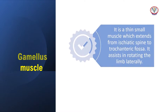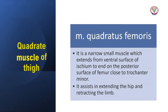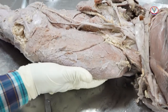The gemellus muscle is a thin, small muscle which extends from the ischiatic spine to the trochanteric fossa. The quadratus femoris muscle is a narrow, small muscle which extends from the ventral surface of the ischium to the posterior surface of the femur close to the trochanter minor.